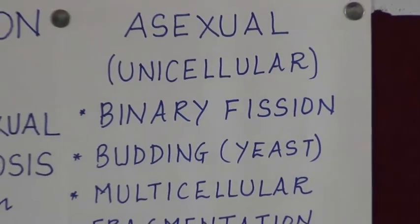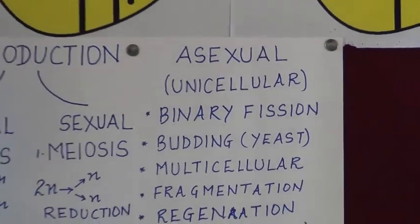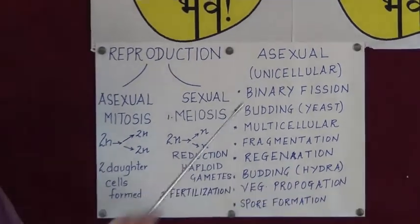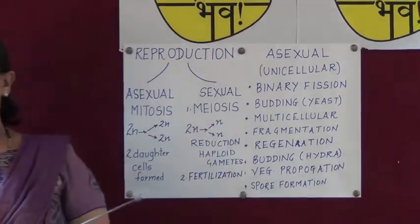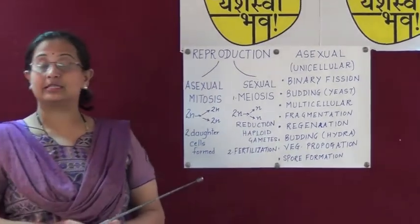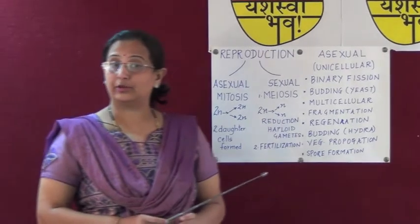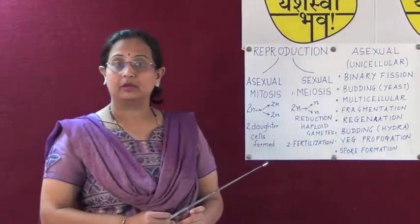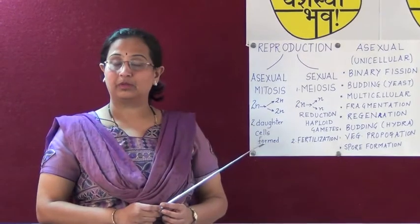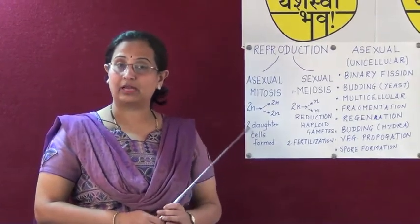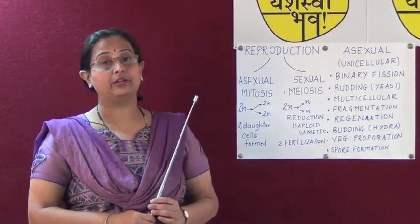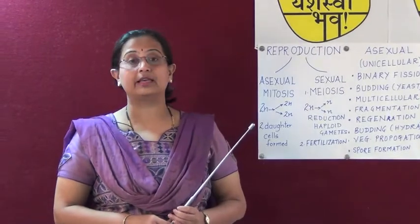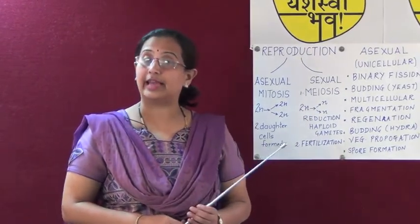We shall now discuss asexual reproduction in unicellular microscopic organisms. Binary fission is a mode of reproduction seen in prokaryotes or in protozoans like amoeba. In binary fission, the cytoplasm divides and the nucleus also divides. This division is along an axis — either longitudinal or transverse.